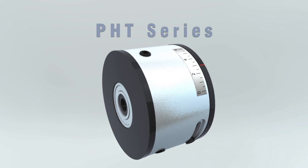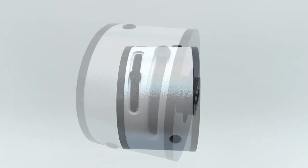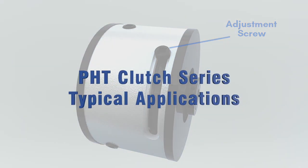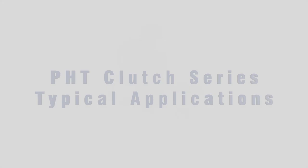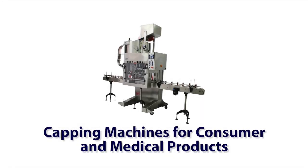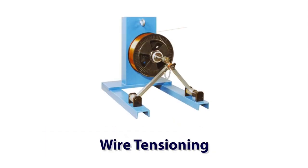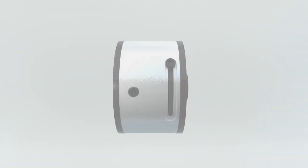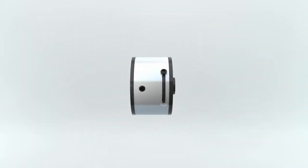The second style is the PHT series, in which the user can set the unit's torque. Typical applications for the PHT series are capping machines for consumer and medical products, wire tensioning, and load simulators for motor testing. The PHT units do not use magnetic particle powder, but rather a hysteresis disc to absorb magnetic flux.